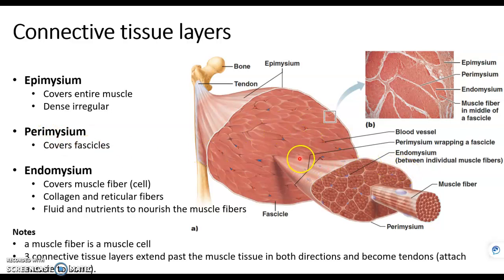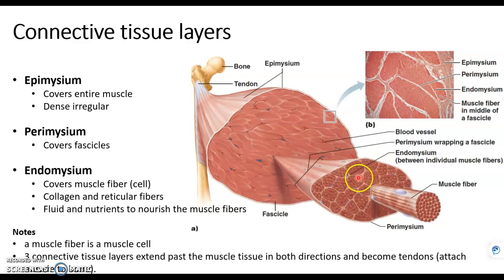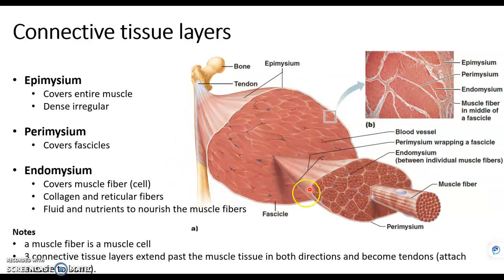If we enlarge one fascicle, we can see that each fascicle is made up of small sections. Each one of those sections is a muscle fiber, and a muscle fiber is a muscle cell. The muscle fibers are wrapped in connective tissue called the endomysium. So we have three levels of organization from the whole muscle to the cell: epimysium surrounds the whole muscle, perimysium surrounds the fascicle, and endomysium surrounds the muscle fiber or muscle cell.